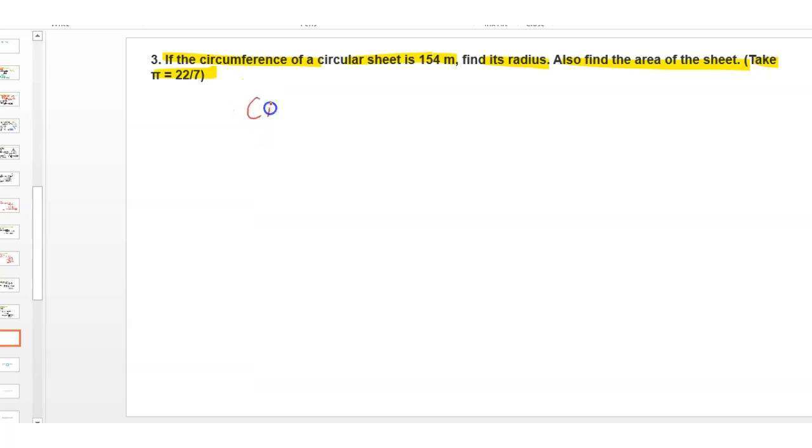So first of all, we write here the circumference of a circle is given. Circumference is equal to 154 meters.